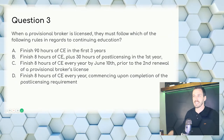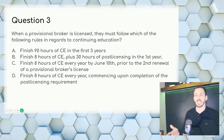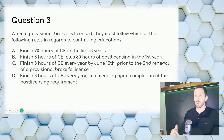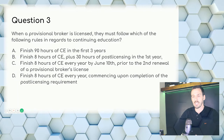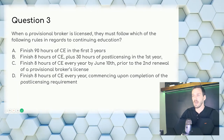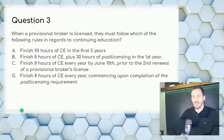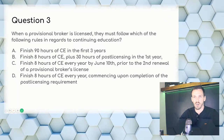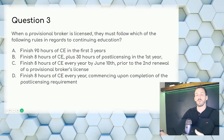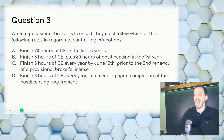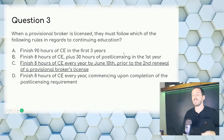Question 3: When a provisional broker is licensed, which of the following rules must they follow regarding continuing education? Continuing education is continued forever, so spending 90 hours is unrealistic — that crosses off A. CE is due June 10th and you can skip your first year, since it seems unrealistic to do eight more hours right after pre-licensing. Answer: C — eight hours of continuing education by June 10th prior to the second renewal of a provisional broker's license.